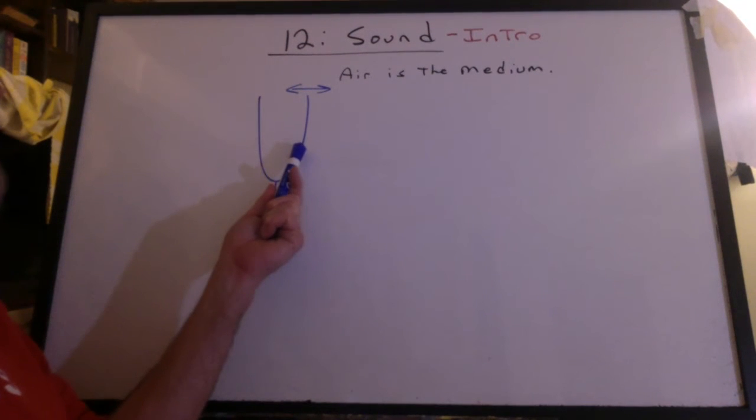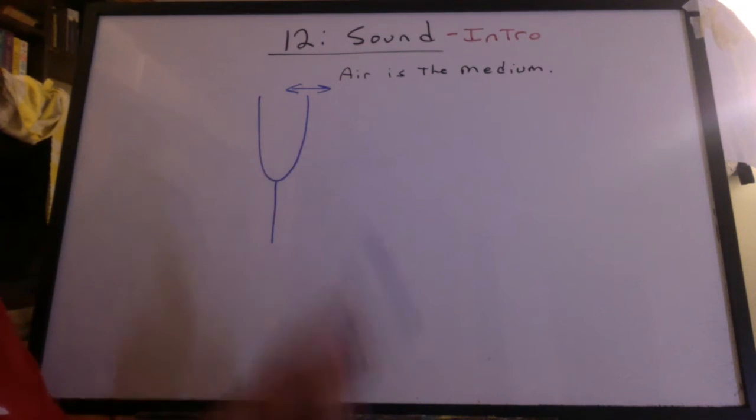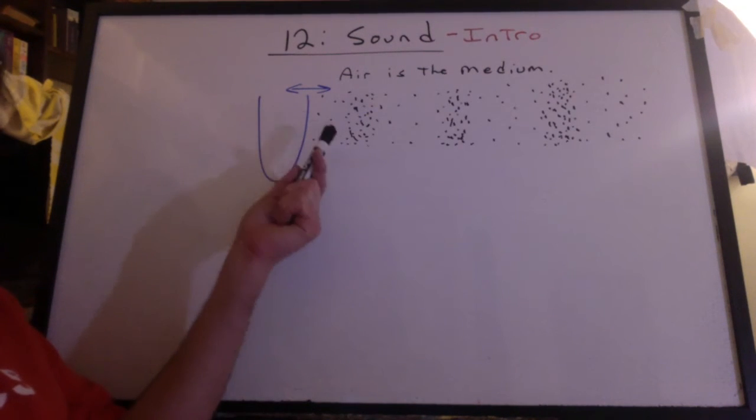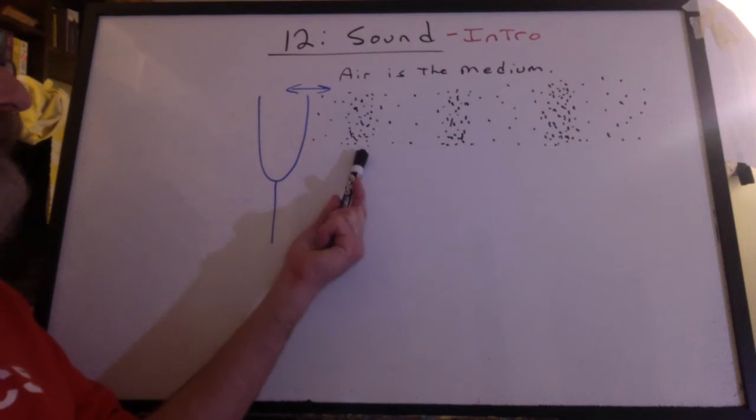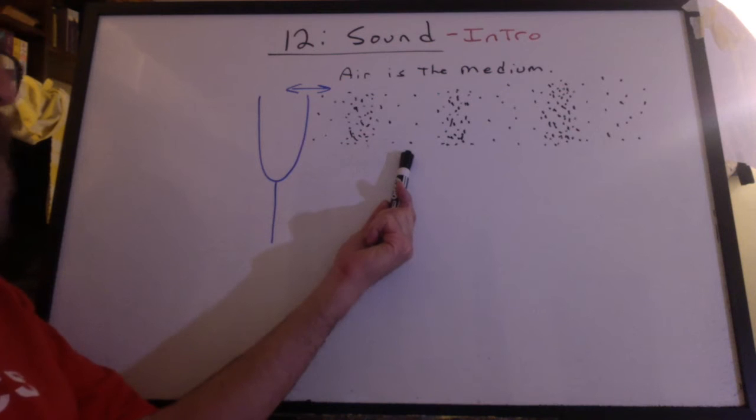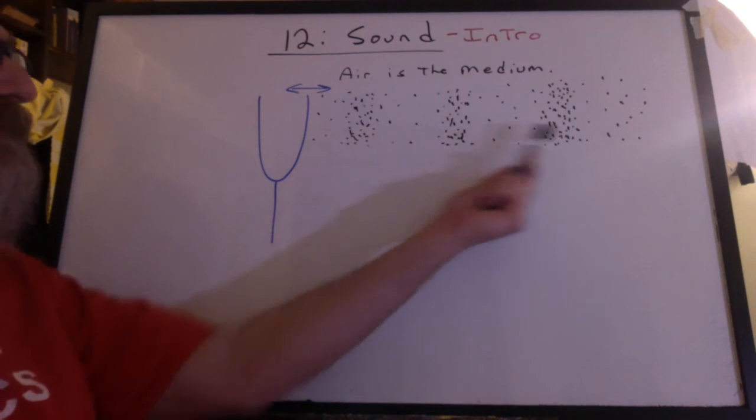Just looking at one tine on the tuning fork, we can see that it's moving back and forth very quickly. This motion pushes against the air molecules, creating at some places higher pressure, lower pressure, than normal air pressure. And these waves of compression move outward.